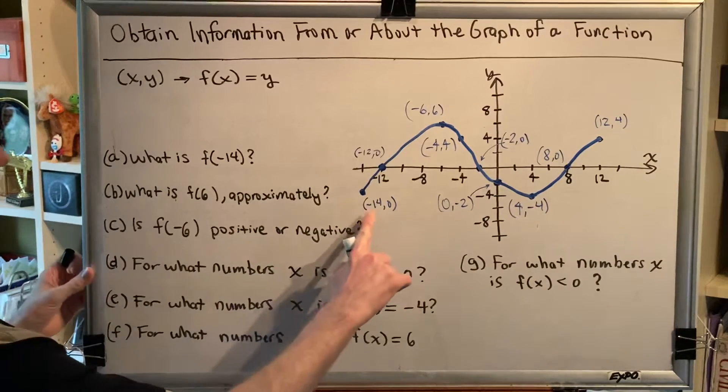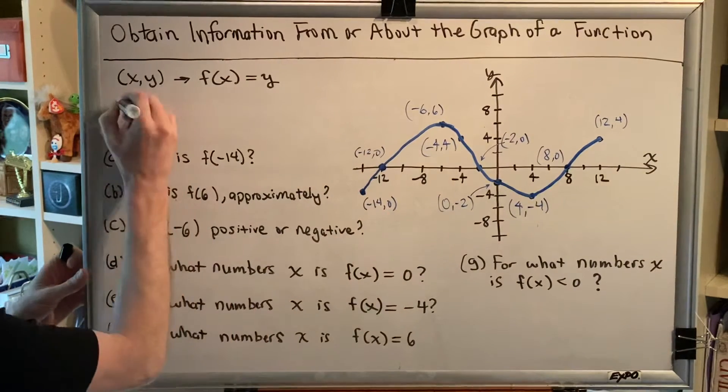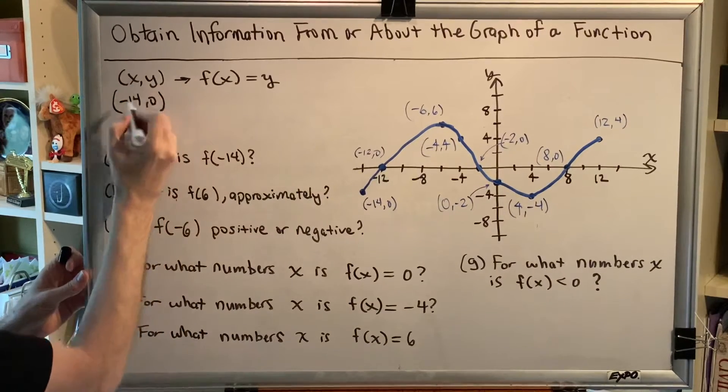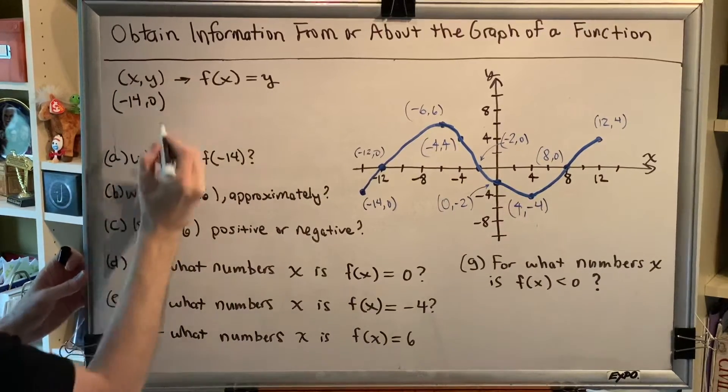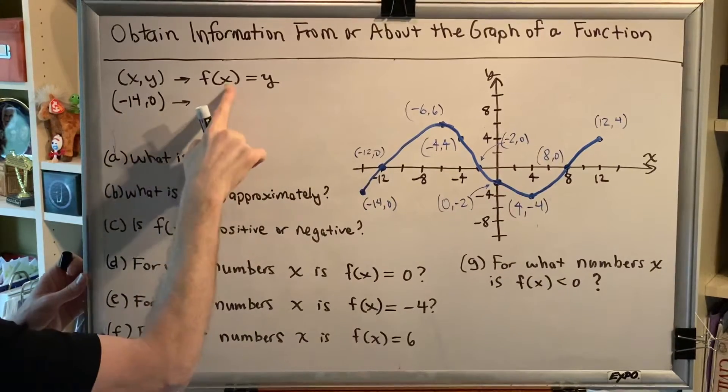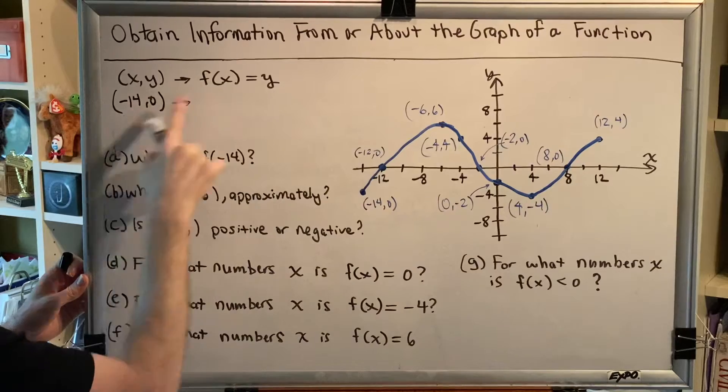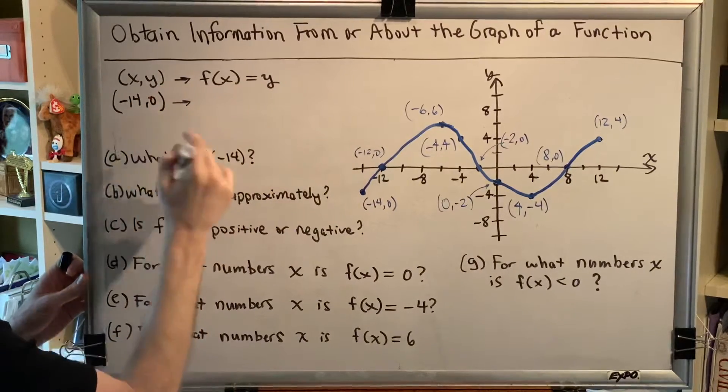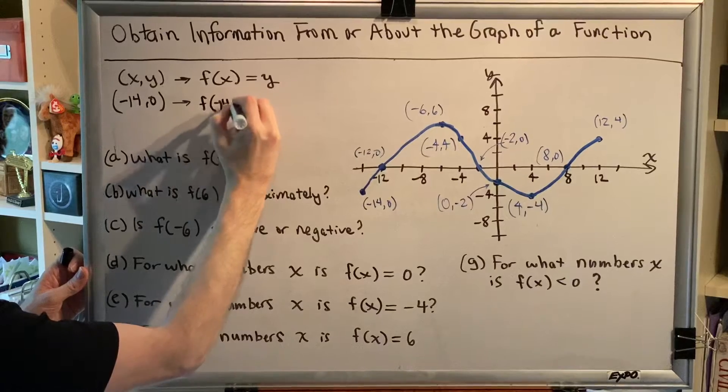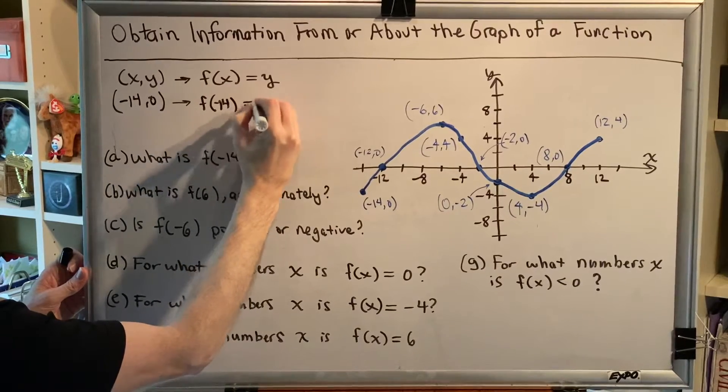For example, let's say we use the ordered pair (-14, 0). The x is negative 14 and the y is 0. So to convert that into function notation, we simply replace each x with negative 14 and each y with 0, and we would get f(-14) = 0.